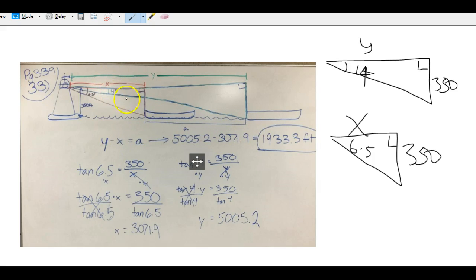We are looking for the distance between them but we have to use the trig ratio first to find x and y. The angle is opposite and adjacent, so tan would work. Tan 6.5 is 350 over x.